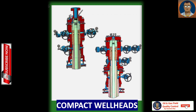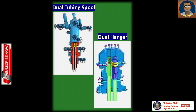Compact wellheads are available in configurations such as uni-head or split design with two, three or four stages, hub and flange connections, side outlets flanged or threaded, elastomer and metal annular seals, and fluted mandrel hangers. The dual completion type of wellhead uses a tubing head and a single christmas tree for a single wellhead that produces from two separate formations at the same time.